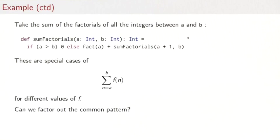Next, let's take the sum of all factorials of the integers between a and b. You see the principle by now. The program again is exactly like sum ints and sum cubes except that where previously we computed the cube, we compute the factorial. These are all special cases of the mathematical sum of values of f of n.